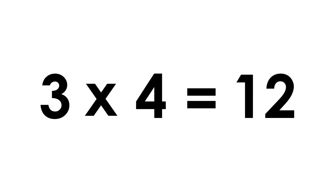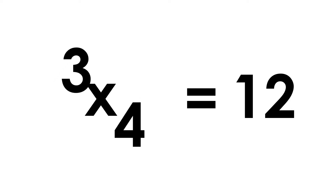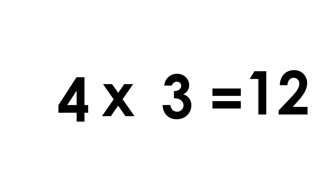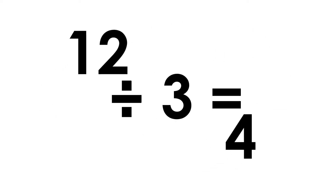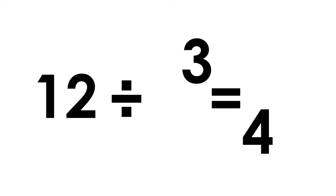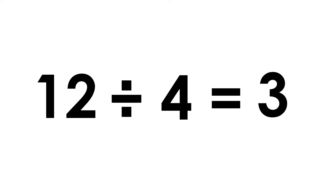Three fours are twelve. Four threes are twelve. Twelve divided by three is four. Twelve divided by four is three.